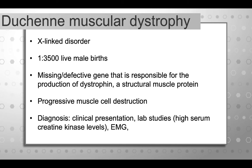You may encounter many different children with neuromuscular disorders, and today we're going to focus on Duchenne muscular dystrophy because it is one of the most common types of neuromuscular disorders you may encounter in pediatric practice. It's also the most common form of muscular dystrophy. There are many forms of muscular dystrophy besides Duchenne, but this is the most common.